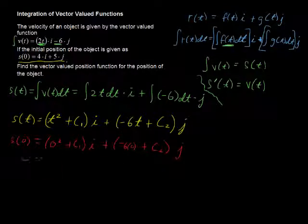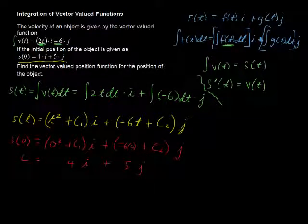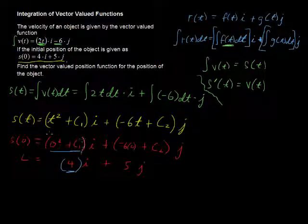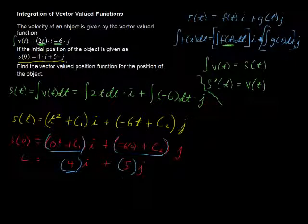And we're also told that that equals 4i plus 5j. Now, I'm not going to guarantee that all of these are going to be that simple, but what happens here is that 0 plus c1 equals 4, right? These two things have to be equal.